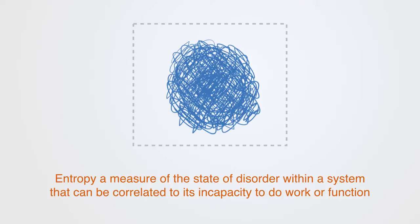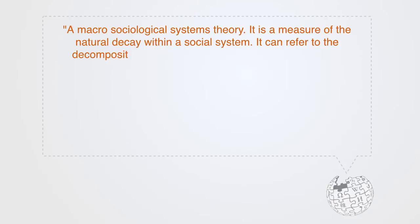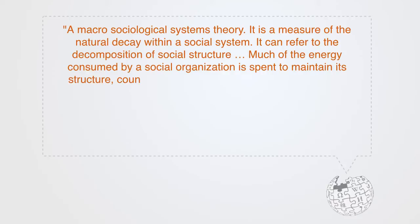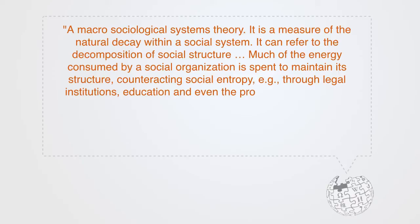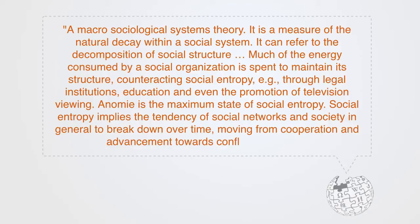Dysfunctionality within systems theory is called entropy, which is a measure of the state of disorder within a system that can be correlated to its incapacity to do work or function. According to Wikipedia, social entropy is a macro sociological system theory. It is a measure of the natural decay within a social system. It can refer to the decomposition of social structure. Much of the energy consumed by a social organization is spent on maintaining its structure, counteracting social entropy, e.g. through legal institutions, education and even the promotion of television viewing. Anomie is the maximum state of social entropy. Social entropy implies the tendency of social networks and society in general to break down over time, moving from cooperation and advancement towards conflict and chaos.